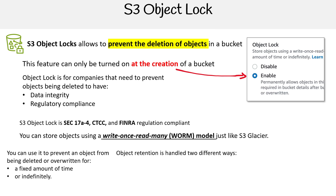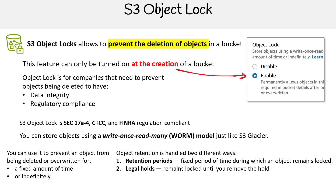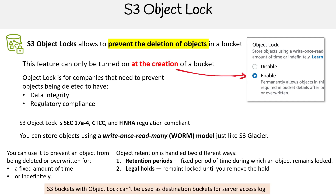Object retention is handled two different ways: we have a retention period, which is a fixed period of time during which an object remains locked, and we have legal holds, where it remains locked until you remove the hold. One caveat to remember with S3 Object Lock is that it cannot be used as a destination bucket for server access logs.